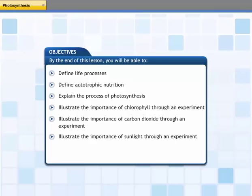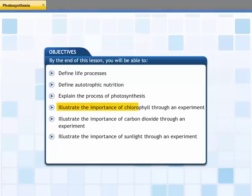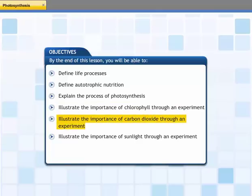This lesson explains how plants manufacture food through photosynthesis. By the end of this lesson, you will be able to: define life processes; define autotrophic nutrition; explain the process of photosynthesis; illustrate the importance of chlorophyll through an experiment; illustrate the importance of carbon dioxide through an experiment; and illustrate the importance of sunlight through an experiment.